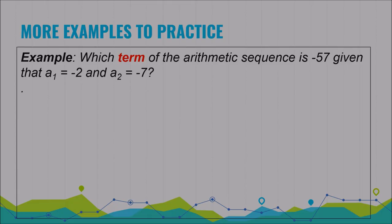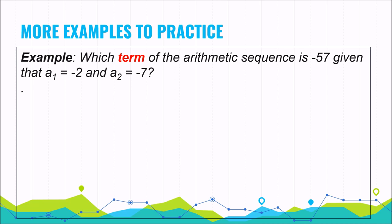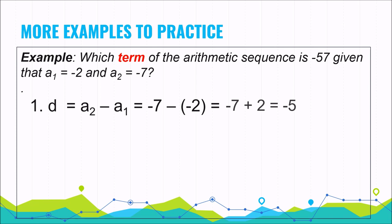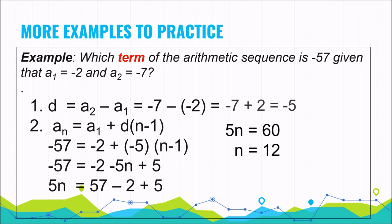Another example: which term of the arithmetic sequence is negative 57, given that a sub 1 equals negative 2 and a sub 2 equals negative 7? Since the two terms are consecutive, the common difference is a sub 2 minus a sub 1, which is negative 7 minus negative 2, equal to negative 5. Solving for the position using the formula, we find n equals 12. Therefore, negative 57 is the 12th term of the arithmetic sequence.